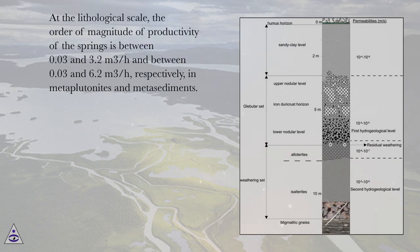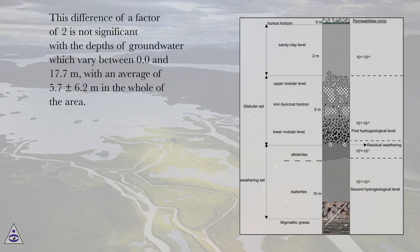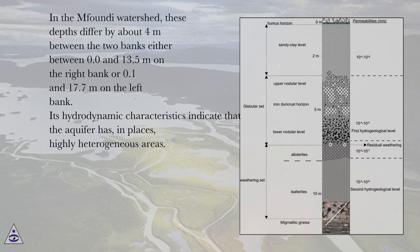At the lithological scale, the order of magnitude of productivity of the springs is between 0.03 and 3.2 m³/h, and between 0.03 and 6.2 m³/h, respectively, in meta-plutonites and meta-sediments. This difference of a factor of two is not significant, with groundwater depths varying between 0.0 and 17.7 meters, averaging 5.7 ± 6.2 meters across the area. In the Mifundi watershed, depths differ by about 4 meters between the two banks: 0.0–13.5 m on the right bank and 0.1–17.7 m on the left bank.